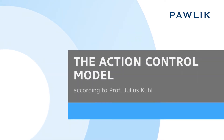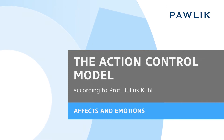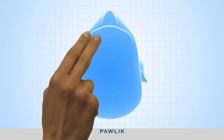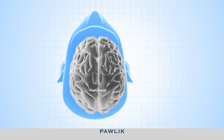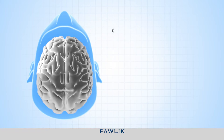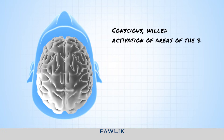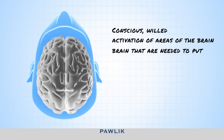The action control model according to Professor Julius Kuhl explains how we form, plan, put into practice, and if necessary, adjust our goals. This is a difficult process that may be disrupted by many different factors. How can we optimize this process in order to achieve our goals as quickly as possible? How can we avoid putting our goals into practice headlessly and take the time to plan carefully? Or in other words, how can we motivate ourselves to finally put those things into practice which we have been planning for so long?